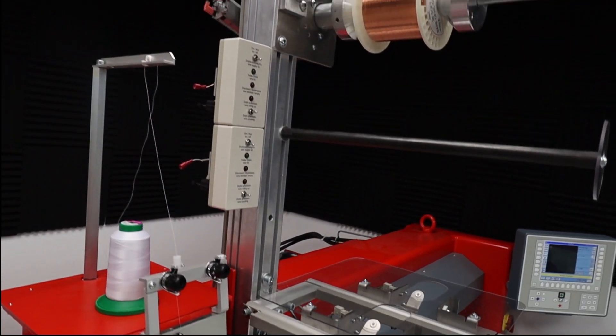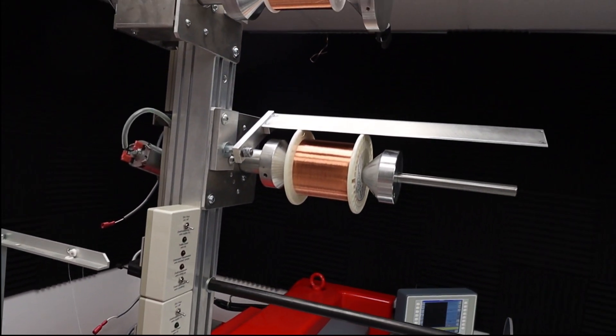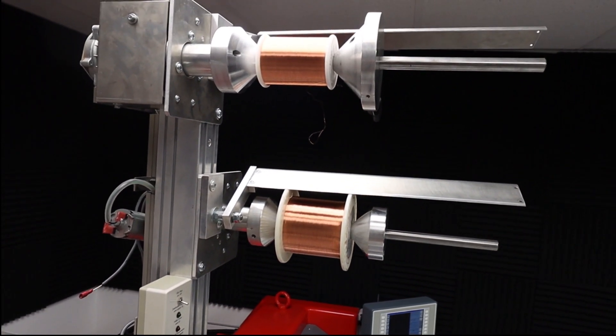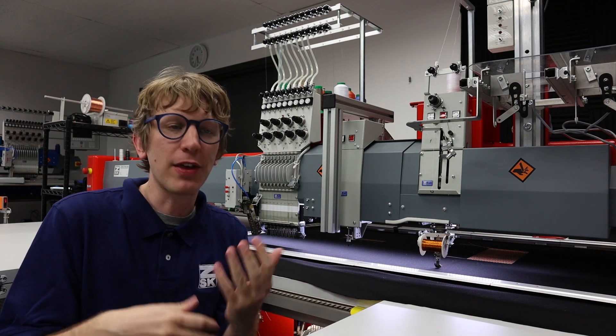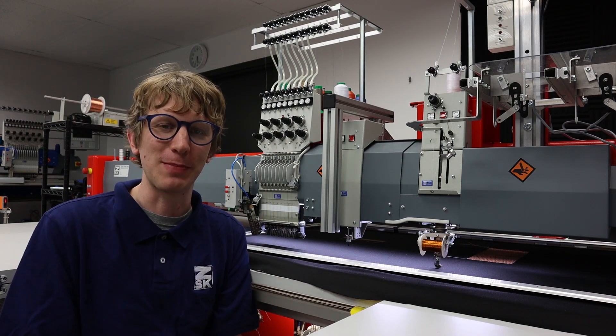Following that, we have the automatic feeder system which allows us to work with large feeders and large industrial cones. This means we don't have to swap different materials, allowing us to have higher throughput and a better manufacturing process.